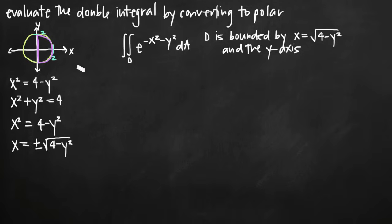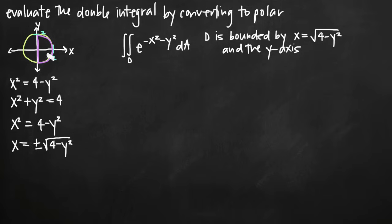So we're looking at the right-half region, which makes sense because we've also been told the region is bounded by the y-axis. The y-axis slices the circle in half, so the region to the right of the y-axis is the region we're interested in and the one for which we'll find the area.